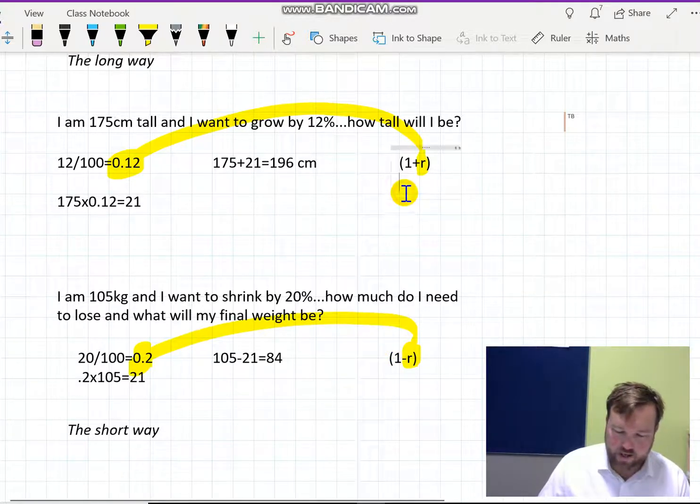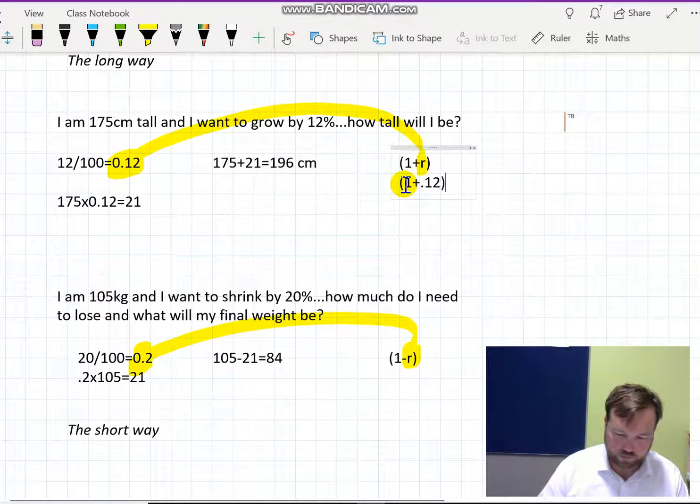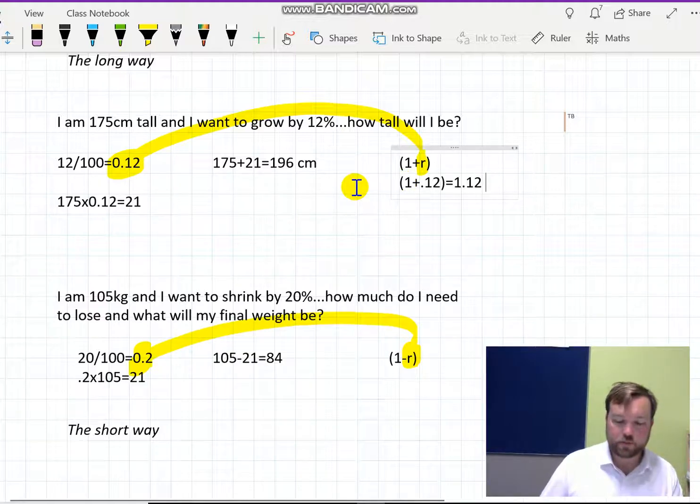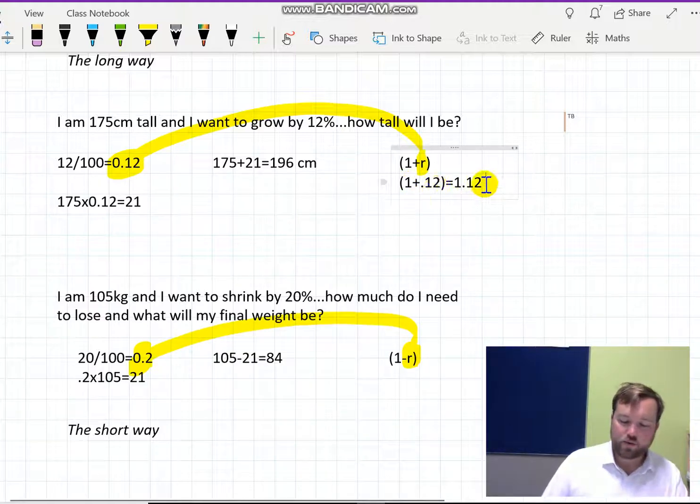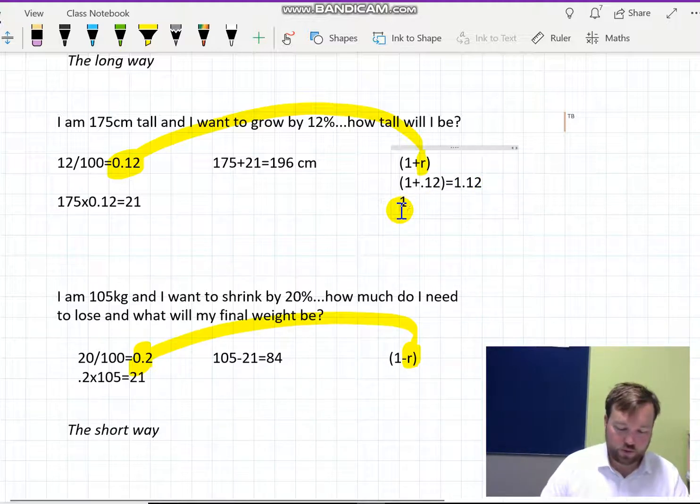So in our case here, the multiplier is 1 plus 0.12. Easy enough. And that is 1.12. So it's very simple in terms of increasing something, is that you find this multiplier, and then do exactly what the name suggests, is you multiply by it.